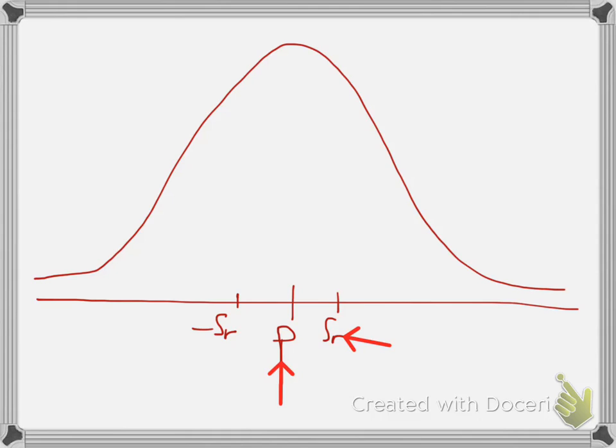Again, over here, there is no negative standard error. But this is to remind you that when you select random samples from the population, some of those sample correlation coefficients are going to be below the actual correlation coefficient of the population and some will be above. So hopefully that helps you picture this.